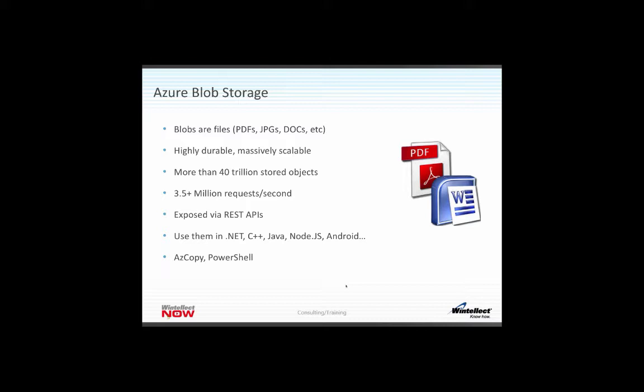Azure Blob Storage can handle all the files you can throw at it without ever running out of space. That's different from an on-premise SAN — if you run out of space, you go to your SAN vendor and say you need 10 more terabytes, which could be a $40,000 option. With Azure Blob Storage, you only pay for what you use and there's always free space available. You also get a millisecond SLA — usually less than 100 milliseconds — so your blobs always come back in a predictable amount of time.